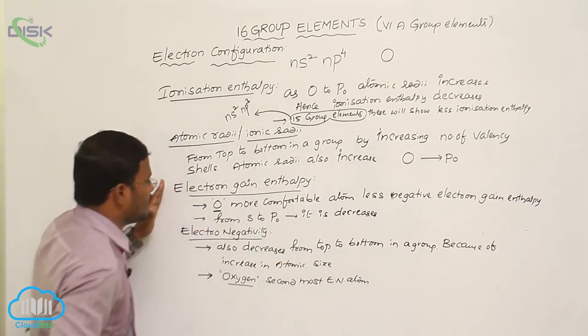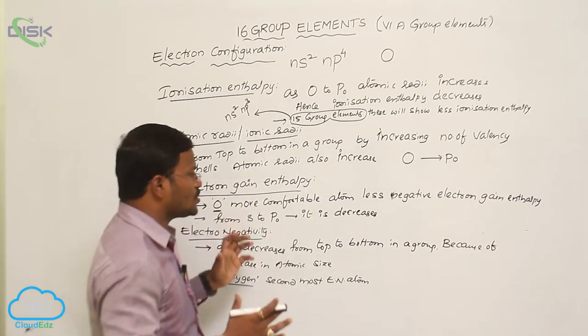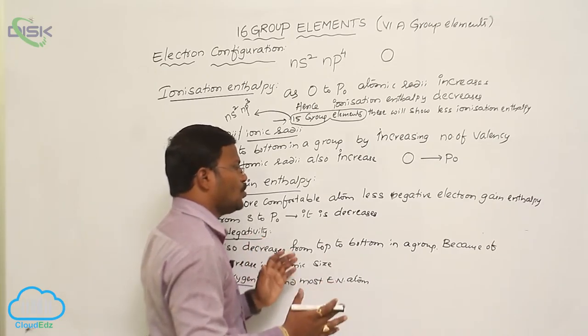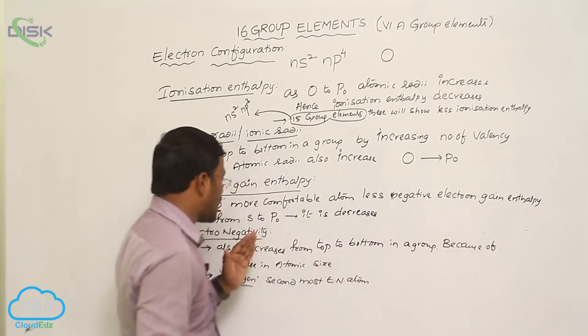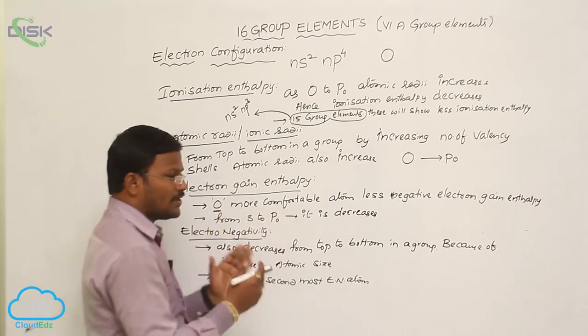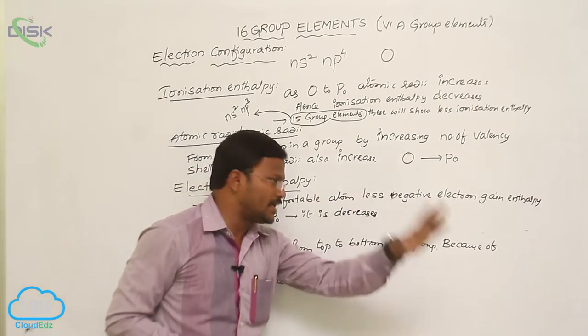Electron gain enthalpy: oxygen is the most comfortable element, so shows less negative electron gain enthalpy, whereas the electron gain enthalpy values from sulfur to polonium decreases.